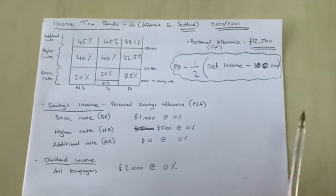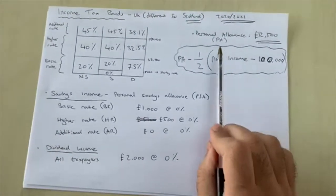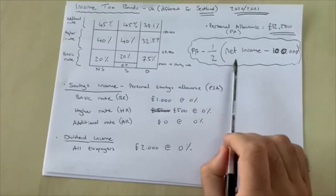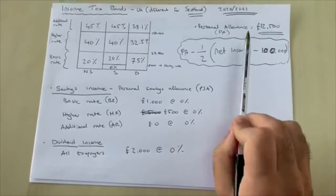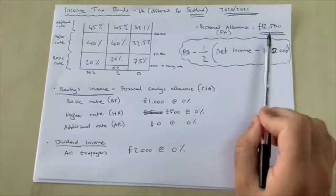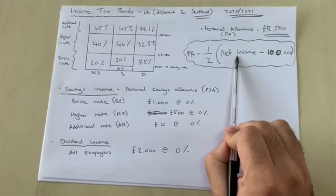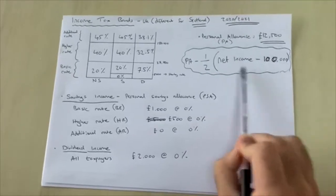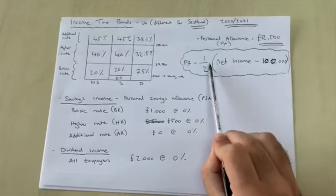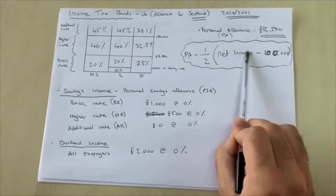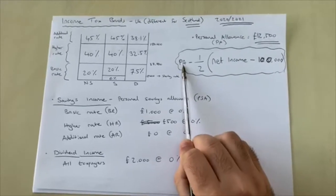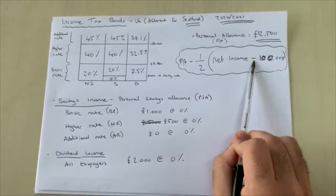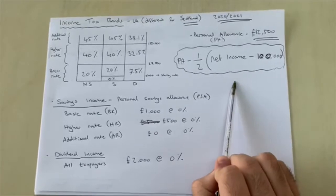If you're earning over £100,000 your personal allowance will be reduced. For example, if you earn £125,000: take away £100,000, which is £25,000; half of that is £12,500; everyone's allowed a £12,500 allowance; take away £12,500 and your personal allowance will be £0.